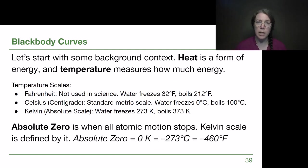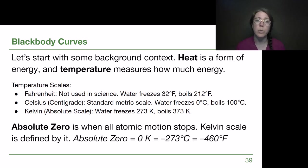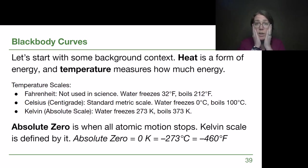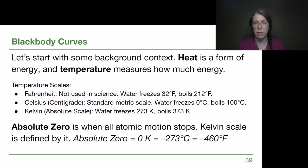Before we talk about black body curves, there are a couple of terms we need to make sure we're all on the same page with. When we talk about heat, we are talking about a form of energy. Often we might be talking about infrared light — like us feeling warm and the glow that we produce as human beings. Heat is a description of energy itself, and light is a motion of energy from one place to another.